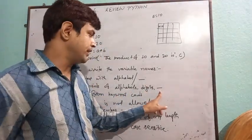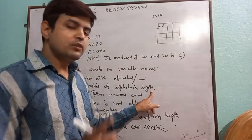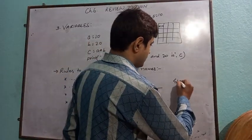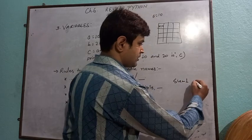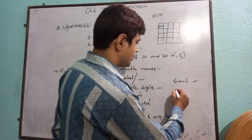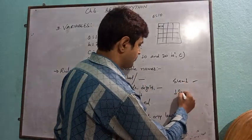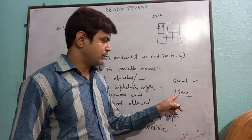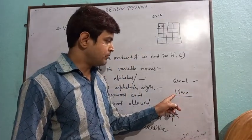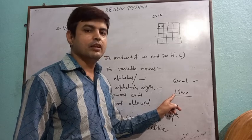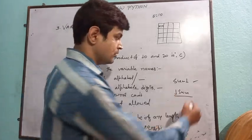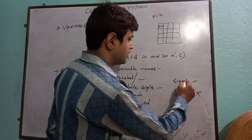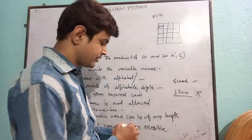But the limitation is that we can't start a variable with digits. We can start a variable name with an alphabet or underscore. We can use digits in the variable name, like 'sum1' — this is a valid variable name. But not '1sum', because it is being started with a digit, which is wrong. 'sum1' or 'sum_1' is the correct form.